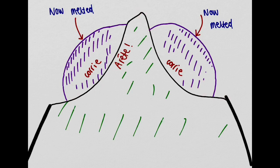So an arete is essentially the knife-shaped ridge that forms between two coris that are formed on opposing sides of a mountainside.